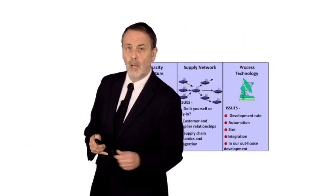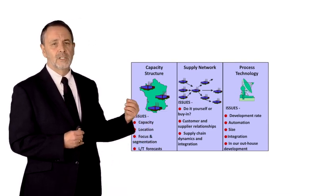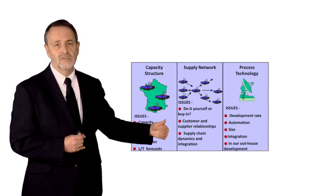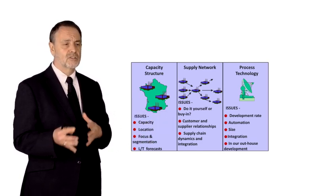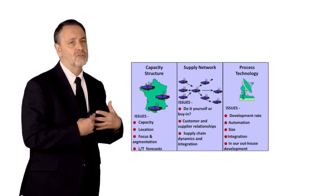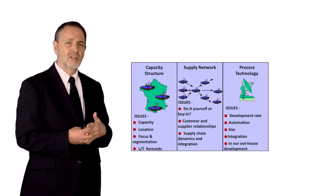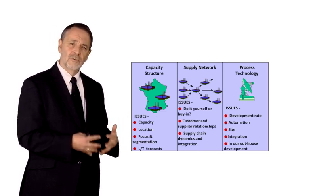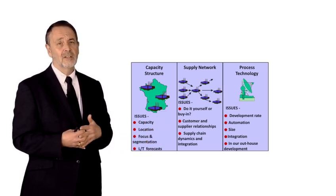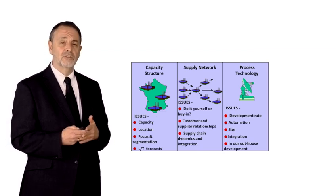Thirdly, it's around our process technology. To what extent are we using automated technology? What is our rate of change of technology? For example, you are studying this course using an online platform. Do we want to make sure that 100% of all our students' experiences are online — 70%, 50%? How do we expand that across all of our programs? That's a key question that illustrates the process technology issue in operations strategy.